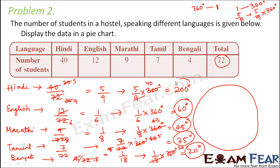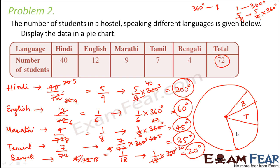Now it is easier for us to draw the sectors out of this circle. Let us first draw the smaller angles — let's say this is the center of the circle. First draw 20 degrees using your protractor — this sector corresponds to Bengali. Then draw 35 degrees for Tamil, then 45 degrees for Marathi, then 60 degrees for English, and finally 200 degrees — slightly more than a straight line — for Hindi. This is how we get a rough pie chart.